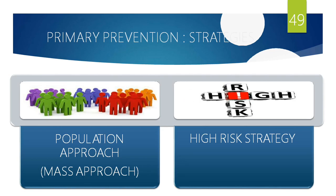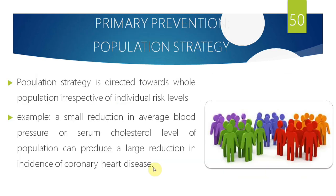There are two types of primary prevention: mass approach and high-risk approach. The mass or population approach applies to a big group of people irrespective of risk level — like health education videos shown before movies against tobacco. It applies to everyone: kids, adults, males, females. That is a population strategy.